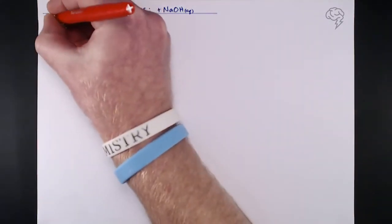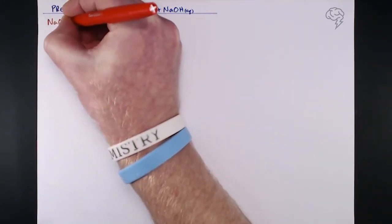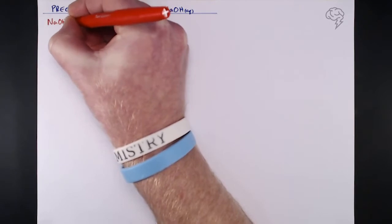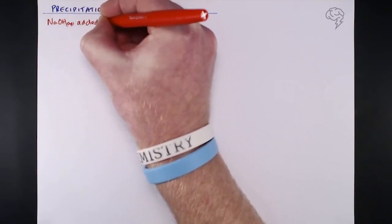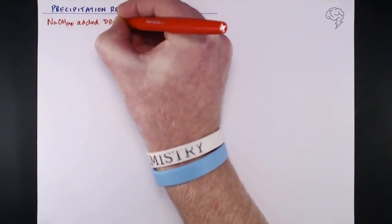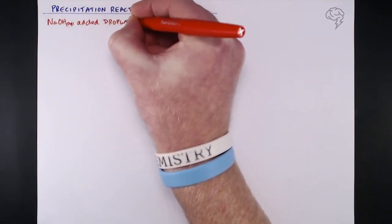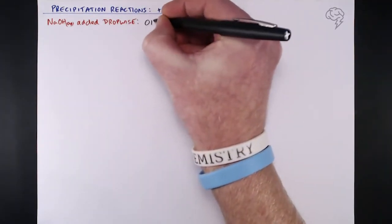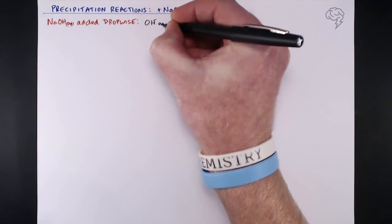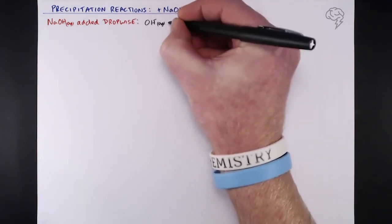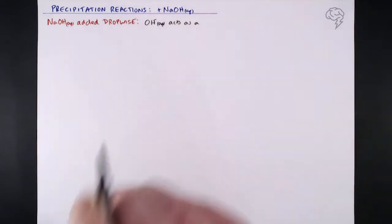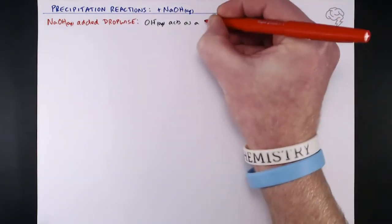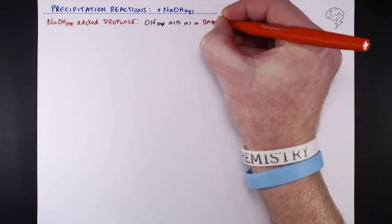What we're going to be doing in a practical sense is adding aqueous sodium hydroxide dropwise — just drop by drop. You're not flooding it with NaOH, just adding it drop by drop to these aqueous ions in solution. What happens is these OH⁻ ions from the sodium hydroxide act as a base.